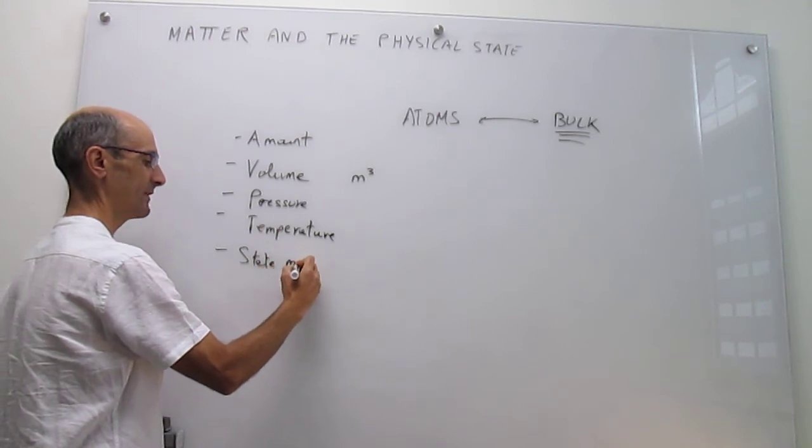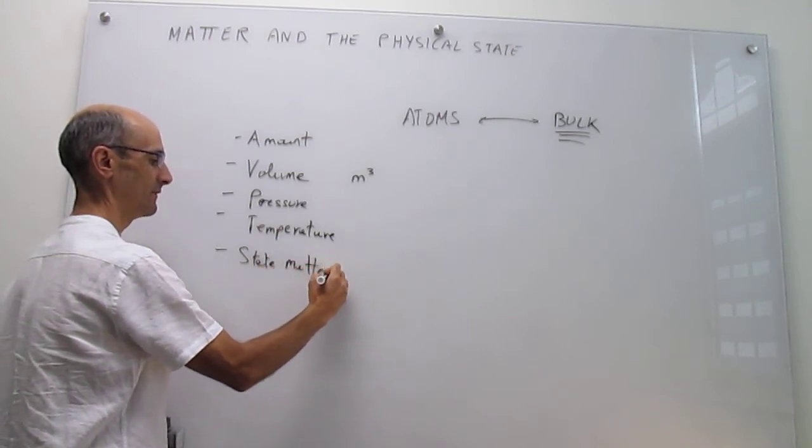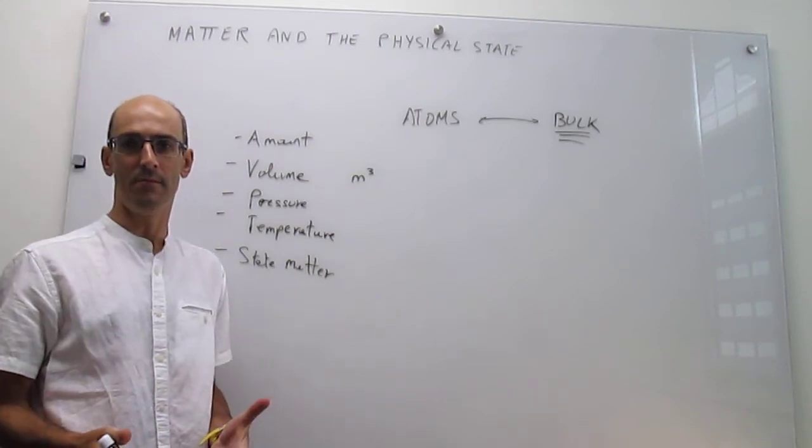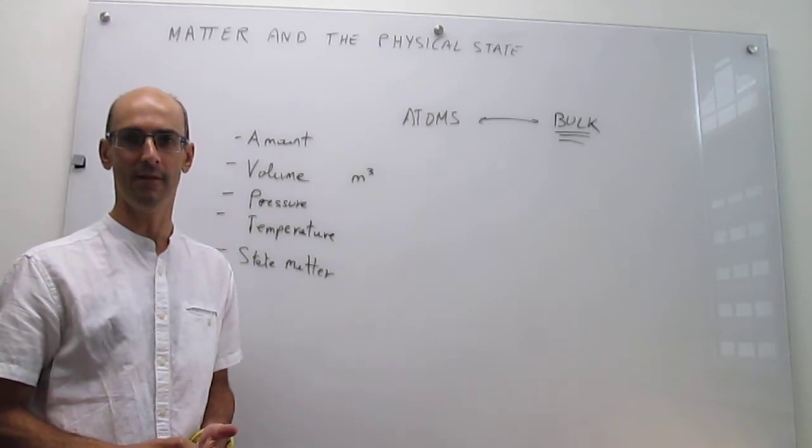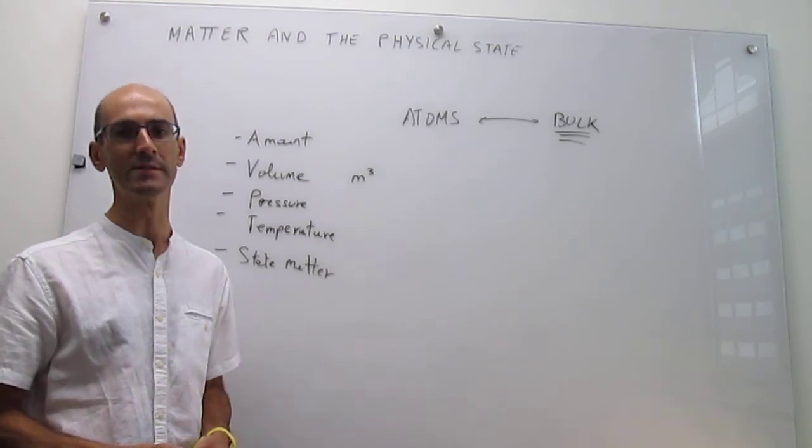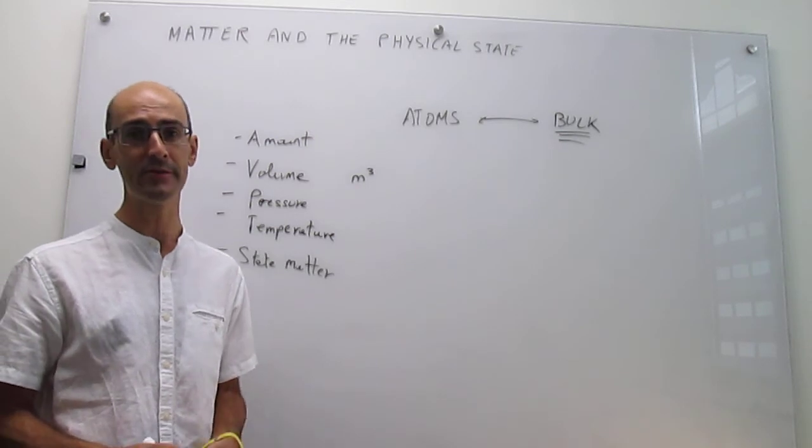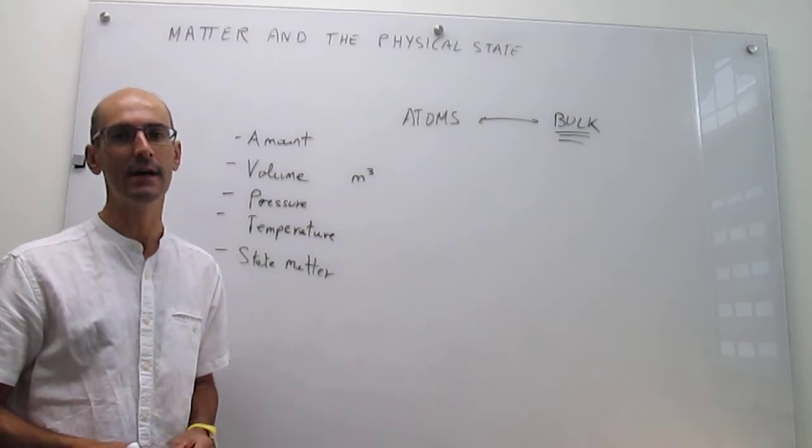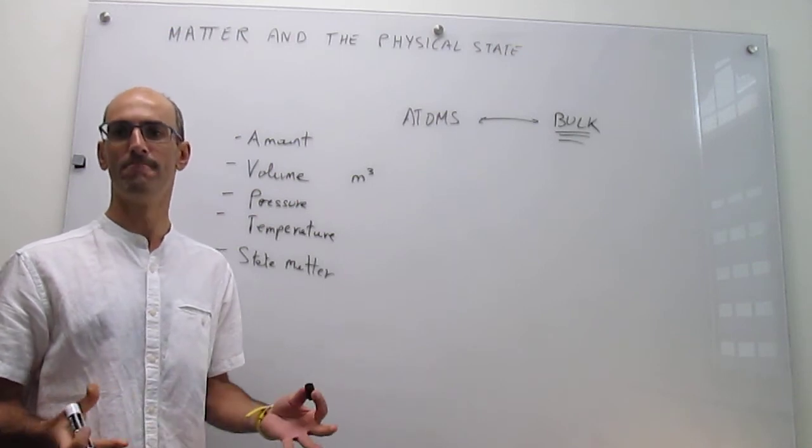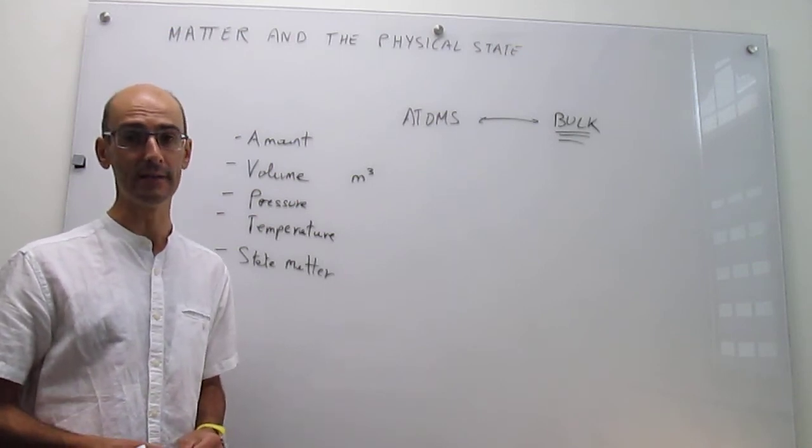So the state of matter is something different from the physical state. The state of matter is simply the state that matter is in. So in general, we only are going to distinguish between three states of matter: solid, liquid, and gas. That's going to be the limit of our work with states of matter in this course.